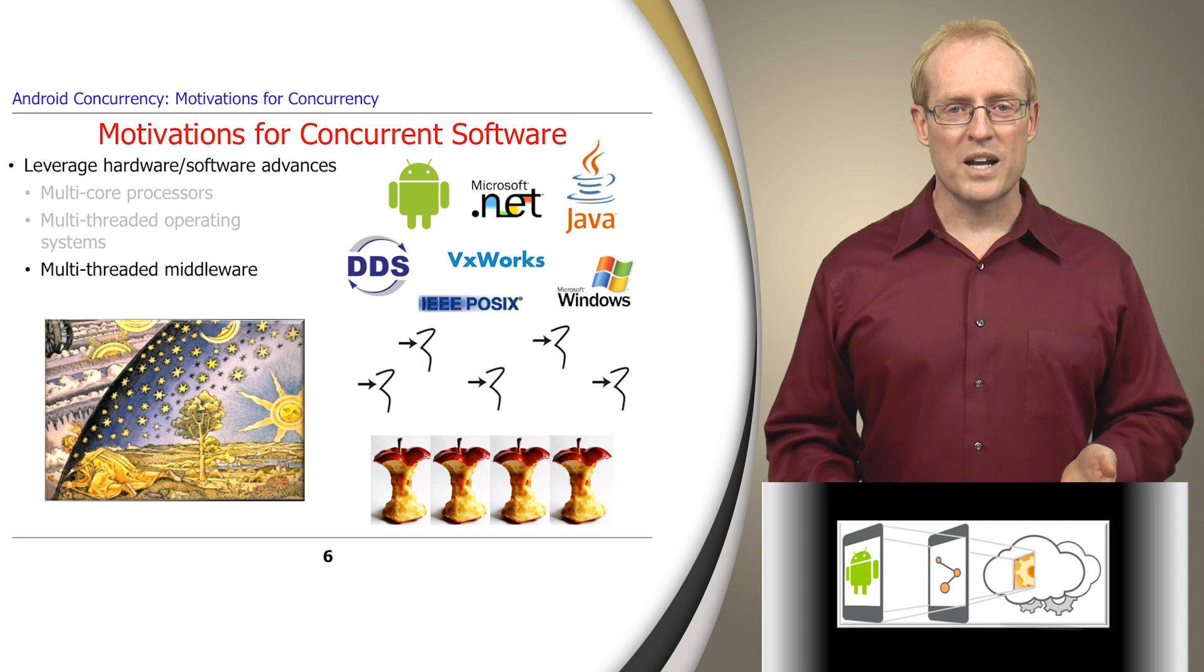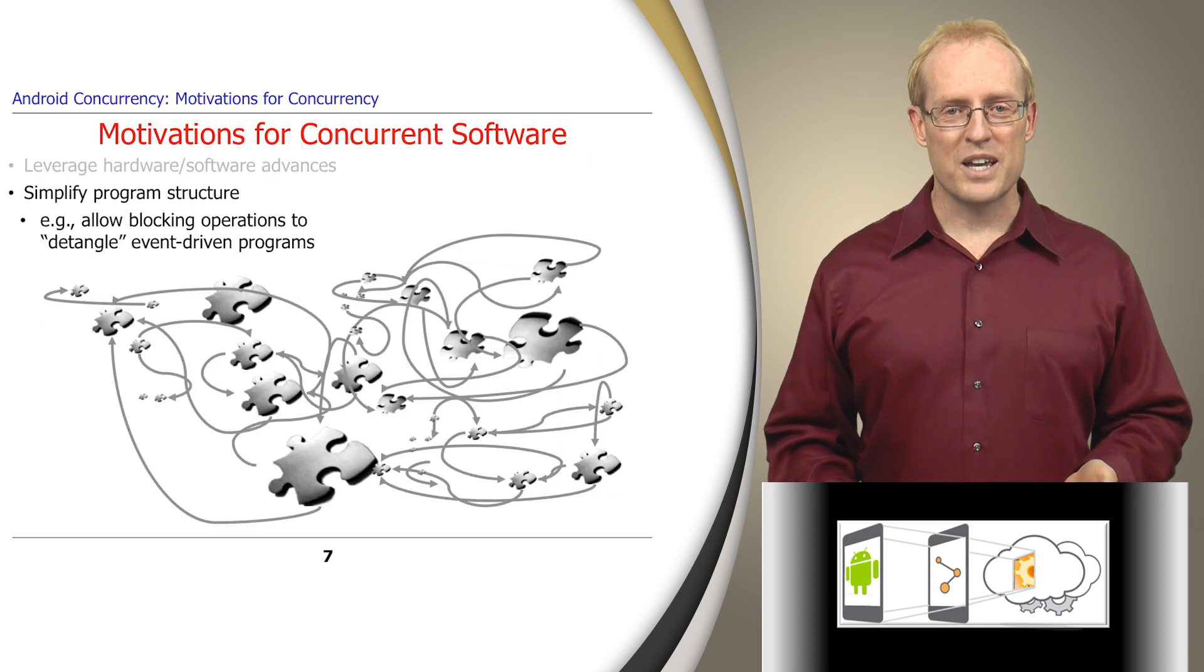Knowledge of concurrency is therefore necessary to program multi-core systems effectively and improve various software quality attributes. For example, hardware and software advances can help improve the way concurrent programs are structured to avoid overly complex and tangled event-driven software.